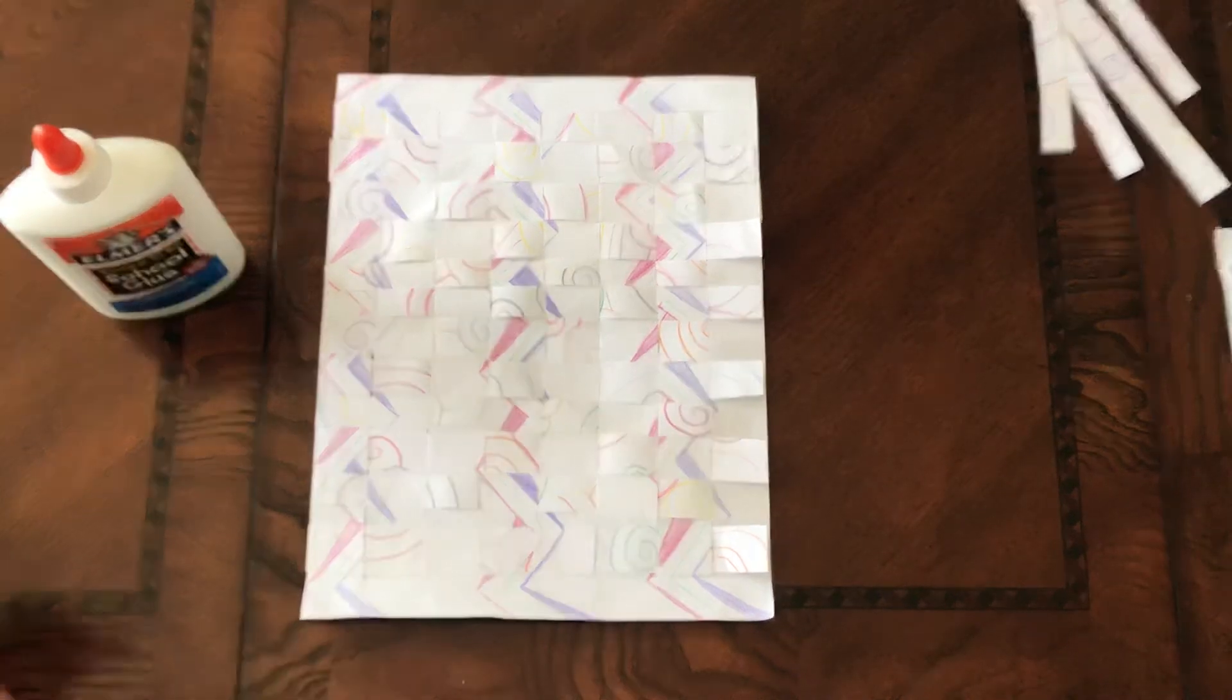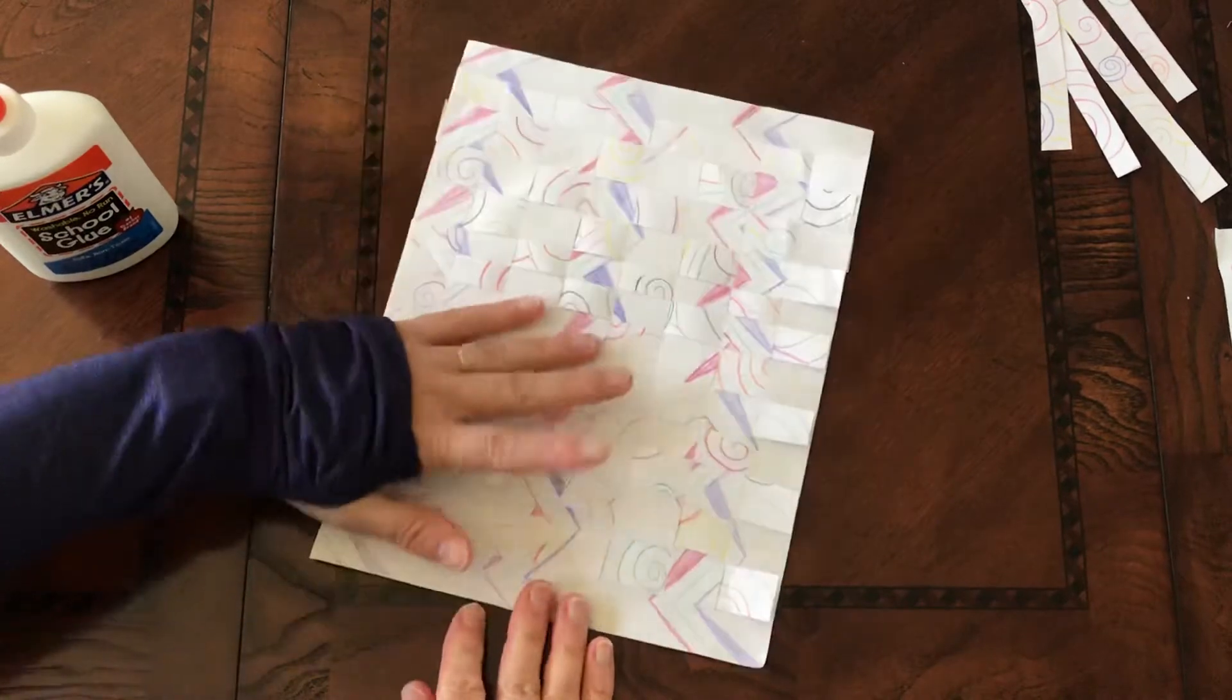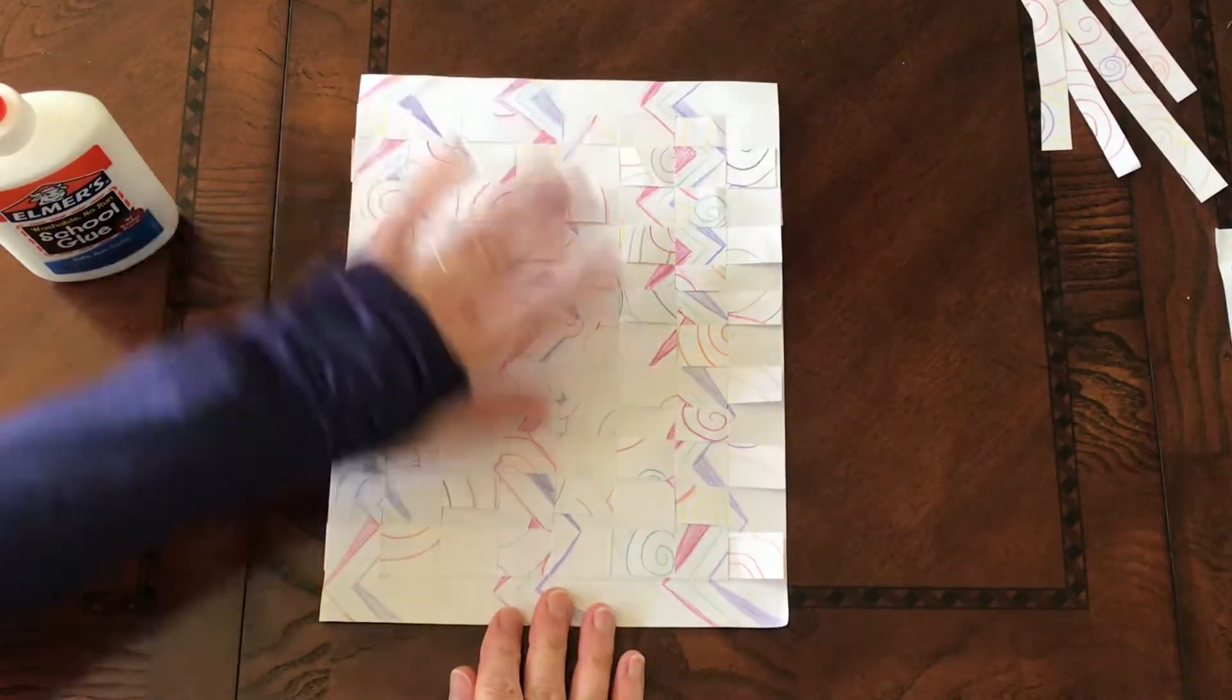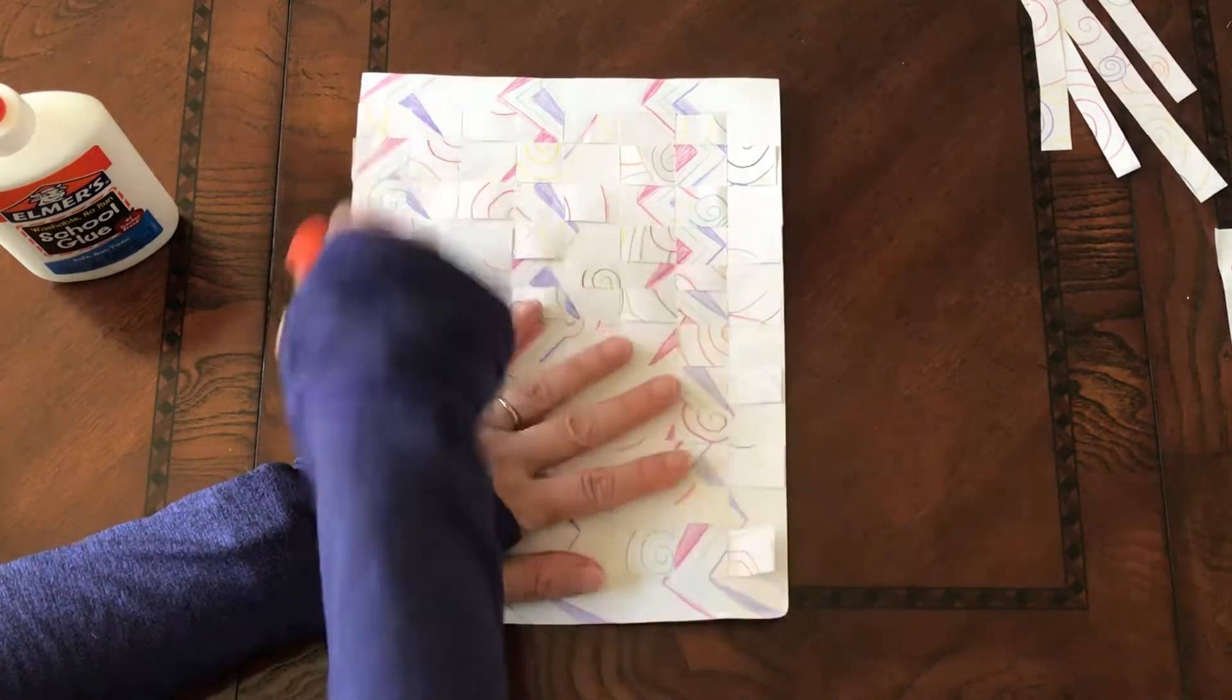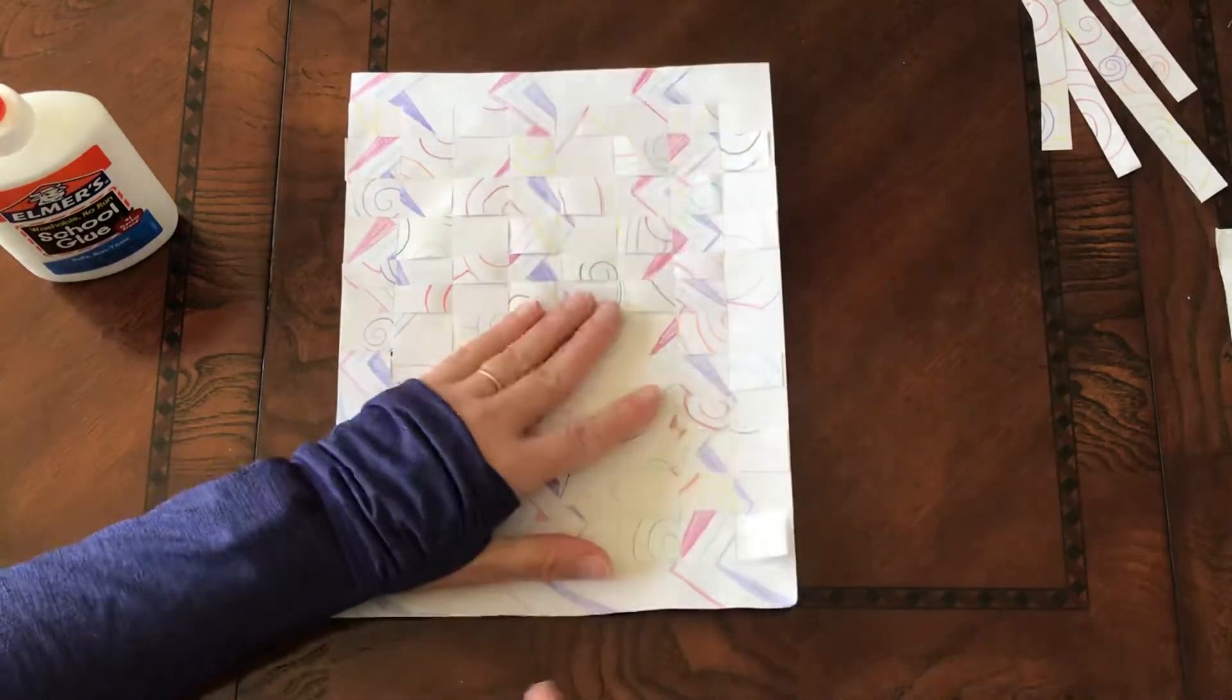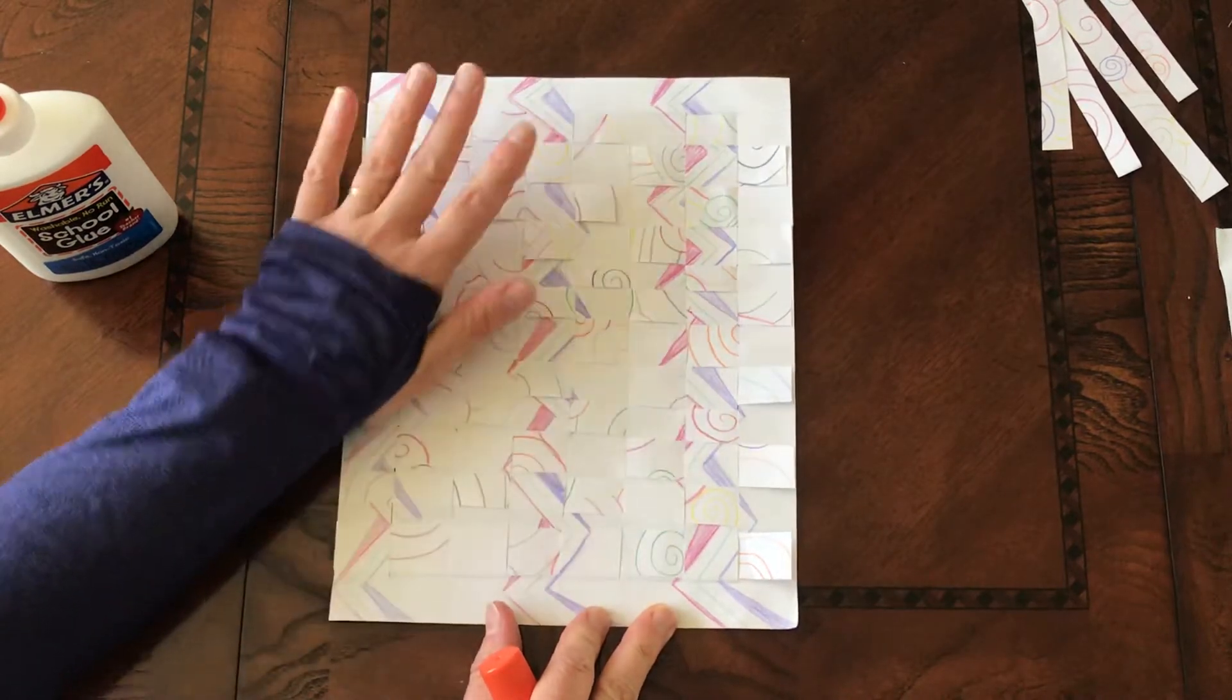Okay, final touches. Once your weaving is complete, your next step is to glue down the tabs on the front side, on each side, and then also the back. This will keep your weaving from falling apart.